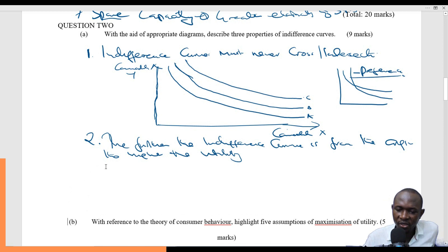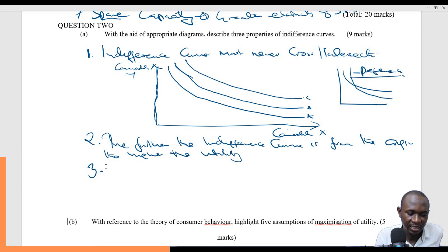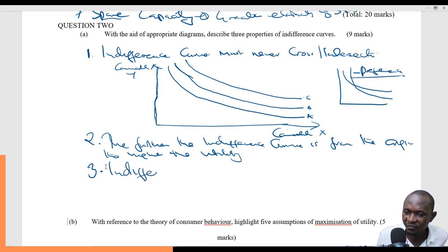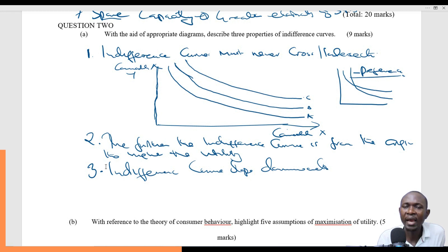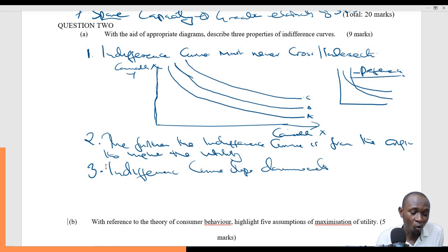The third property of indifference curves is that indifference curves slope downwards. There is a reason why: the only way an individual can increase the consumption of one commodity is by losing the consumption of the other commodity.